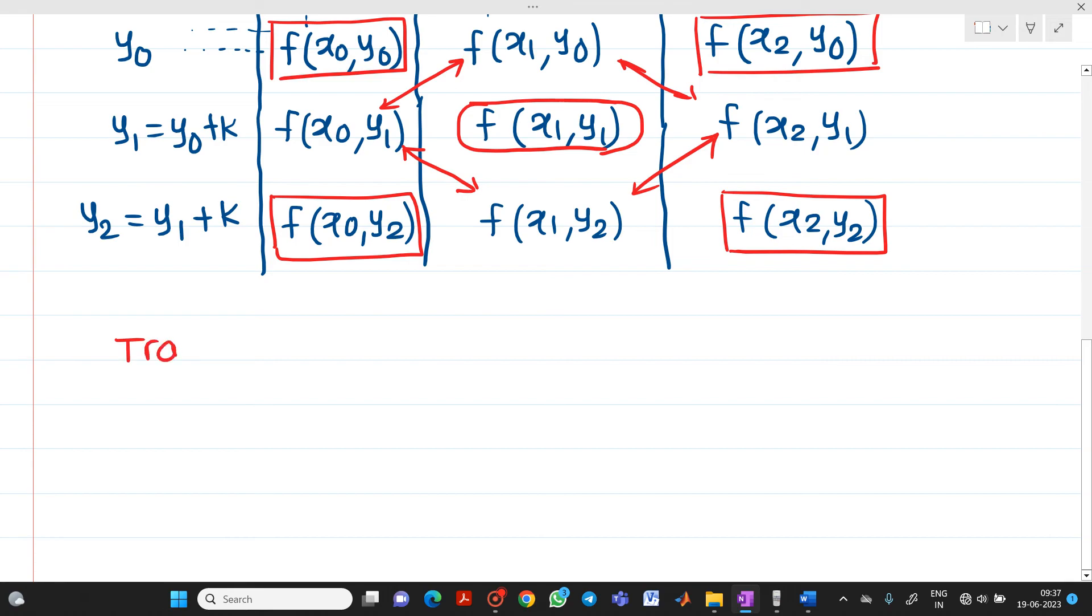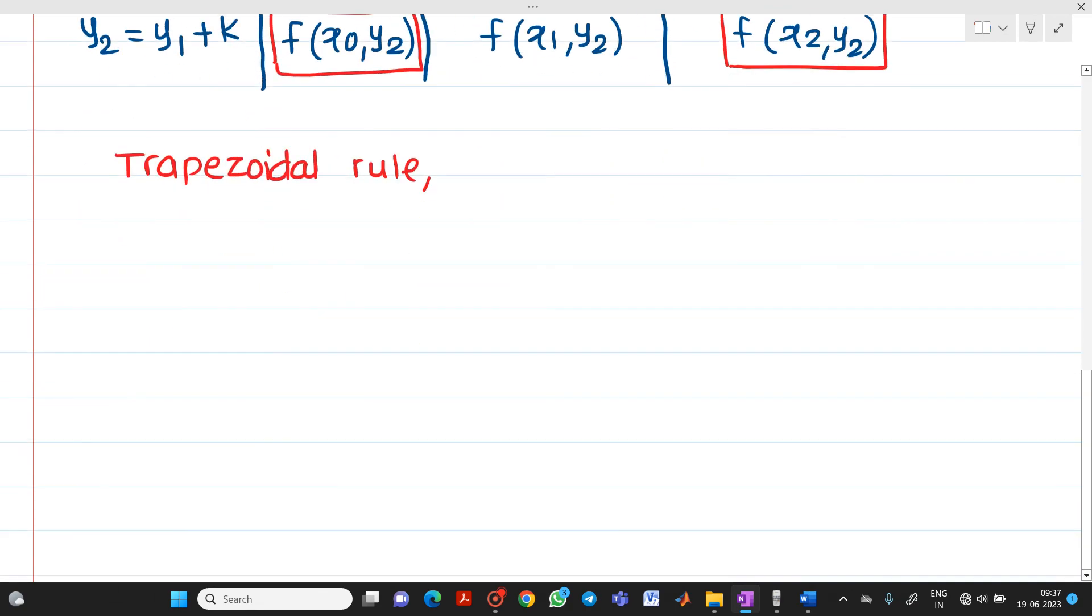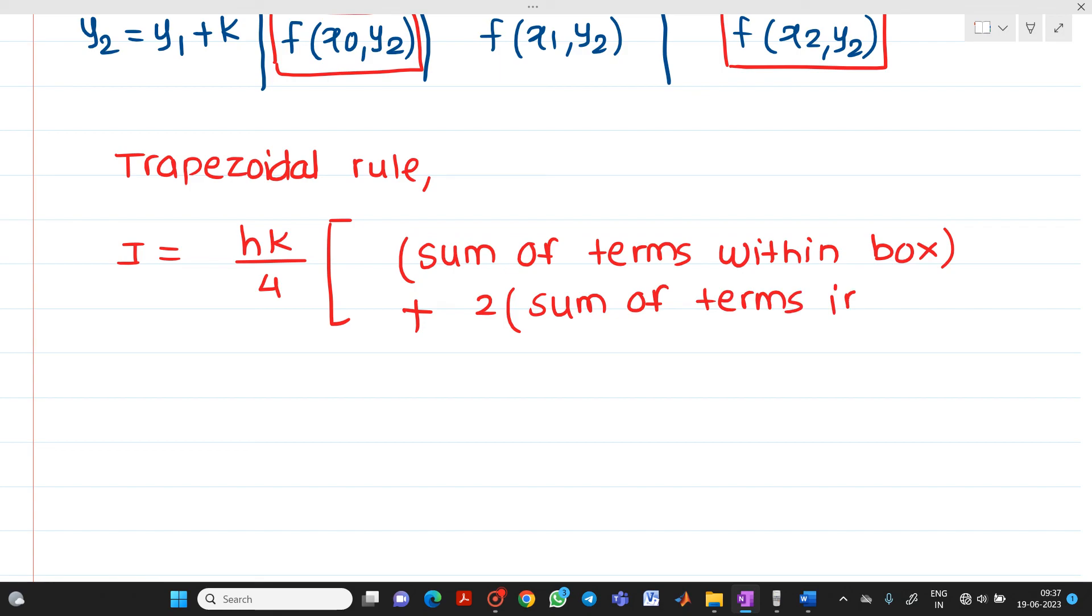Now what is the formula of trapezoidal rule? So let me write it here. I will be equal to hk upon 4 into bracket sum of terms within box plus 2 into sum of terms indicated by arrow plus 4 into middle term from table.